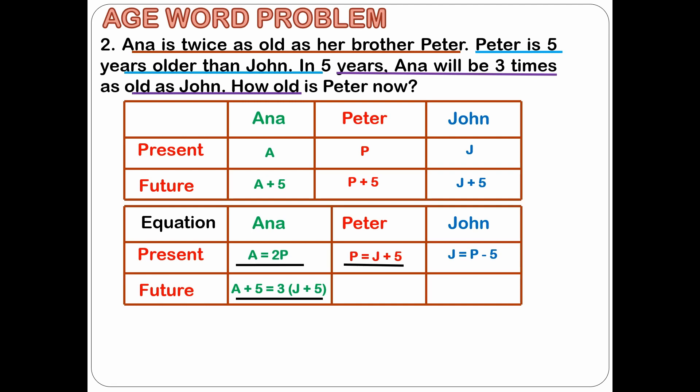Let's use substitution. We will substitute 2P for A and P minus 5 for J. The equation will become 2P plus 5 is equal to 3 times P minus 5 plus 5. Now we're left with only one variable and that is for Peter, which is the variable we want to calculate. After simplifying, we get the age of Peter at present is equal to 5. If you want to also calculate the age of Anna, you will just plug in the age of Peter into this equation.